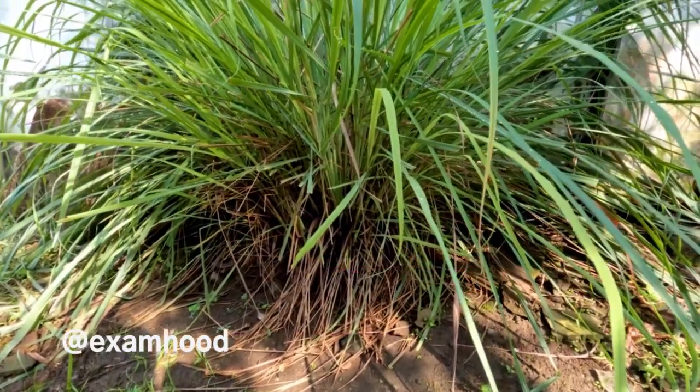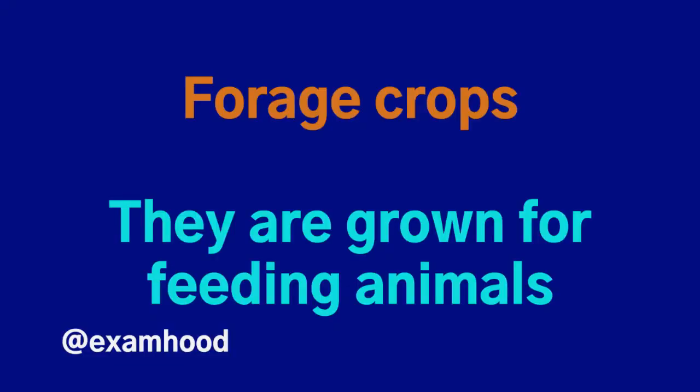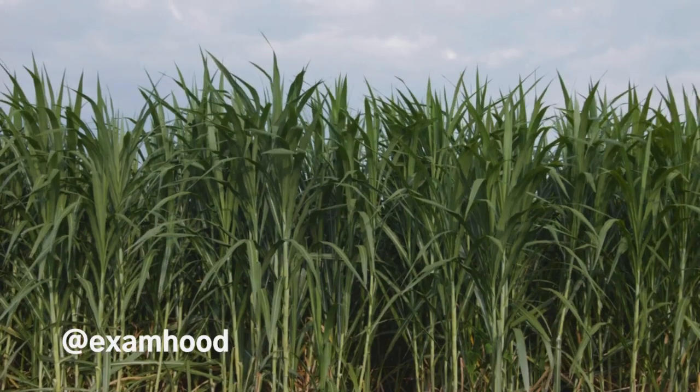Forage crops — they are grown for feeding animals. Example: elephant grass.